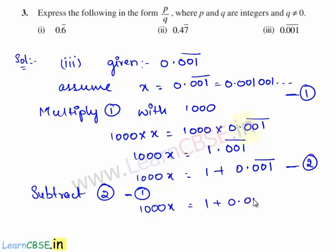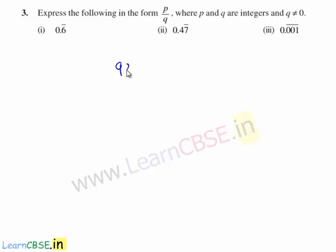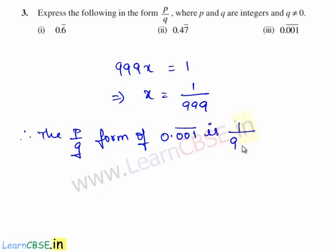Now let us subtract equation 1 from equation 2. Therefore 1000x minus x gives 999x, and 0.001 bar gets cancelled, leaving us with 1. So 999x is equal to 1, which implies x is equal to 1 upon 999. Therefore the p by q form of the given decimal expansion 0.001 bar is 1 by 999, where 1 and 999 are integers and the denominator is not equal to 0.